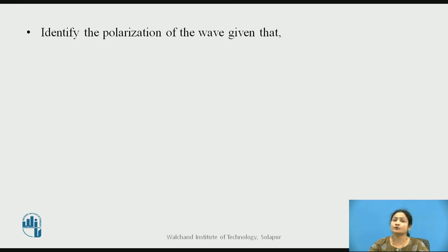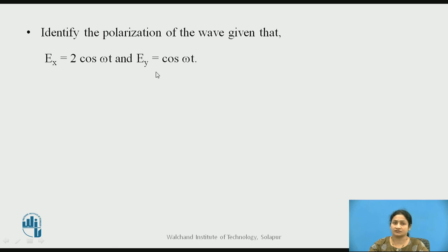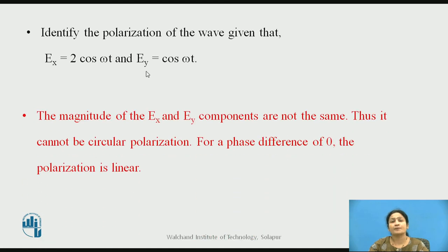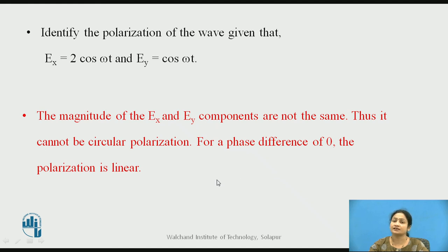Pause the video and identify the polarization of the wave given by two equations with Ex in the x direction and Ey in the y direction. If you observe these two equations, the amplitudes are different. Since the magnitudes of Ex and Ey are not the same, it cannot be circularly polarized. The phase difference is equal to zero, which is why it is linearly polarized.